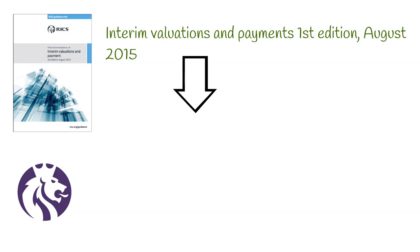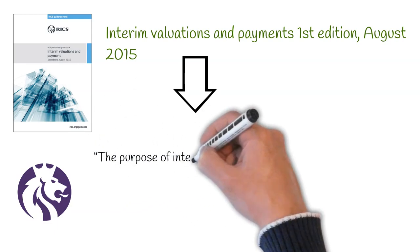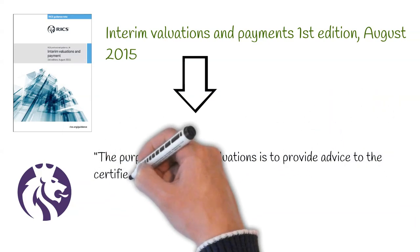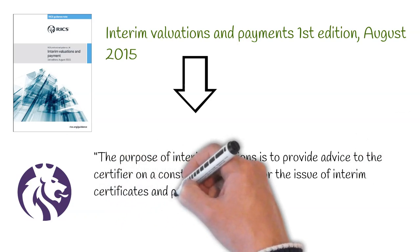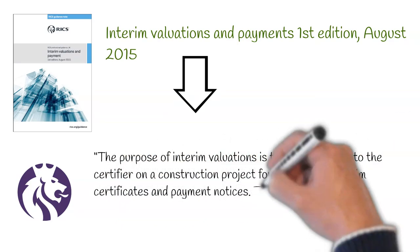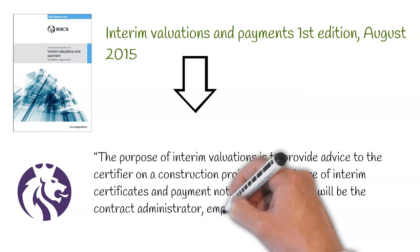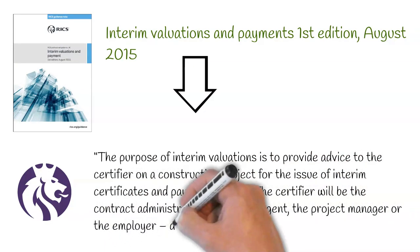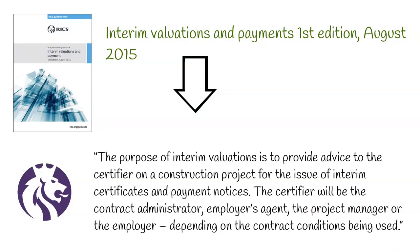The RICS states the following on the purpose of valuations: the purpose of interim valuations is to provide advice to the certifier on a construction project for the issue of interim certificates and payment notices. The certifier will be the contract administrator, employer's agent, project manager or the employer depending on the contract conditions being used.